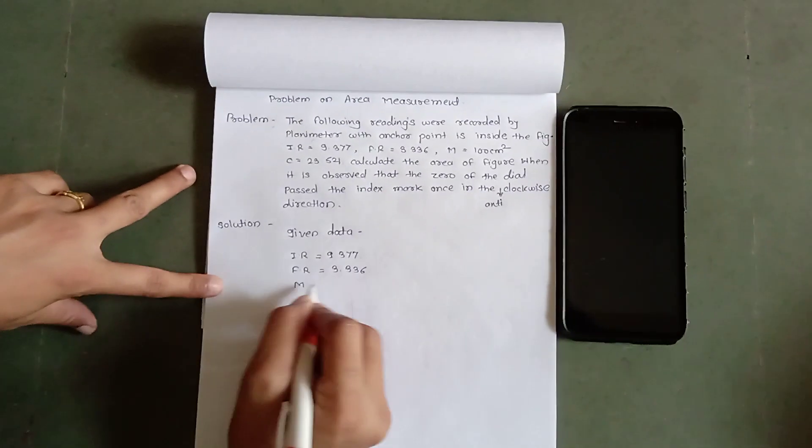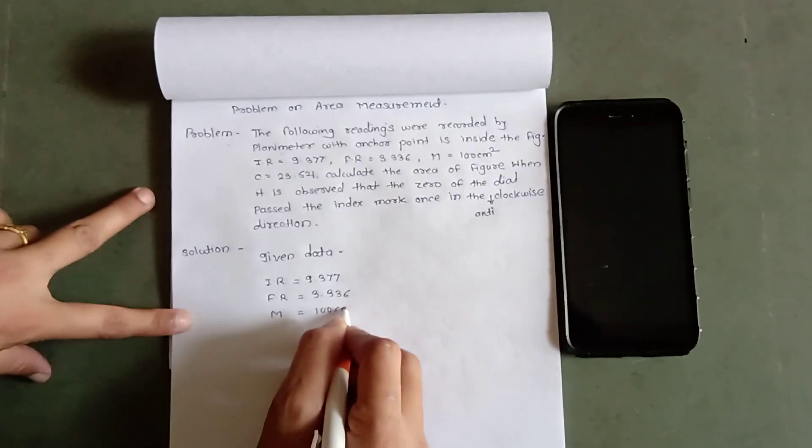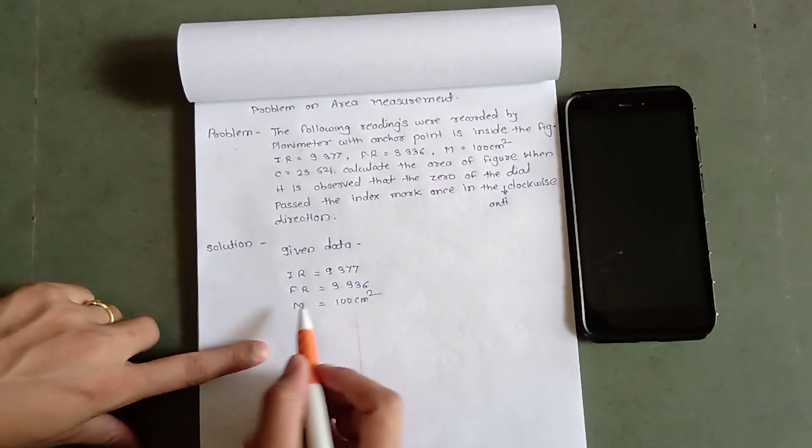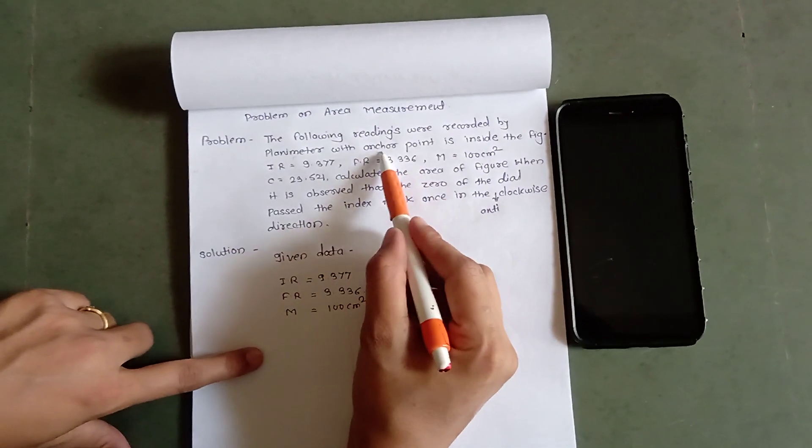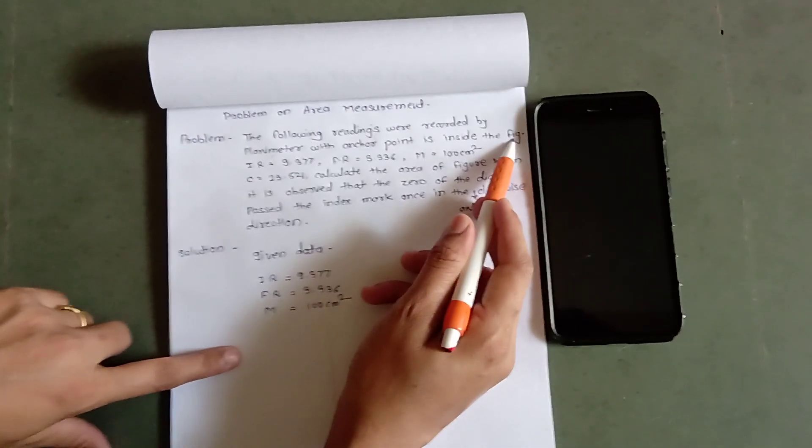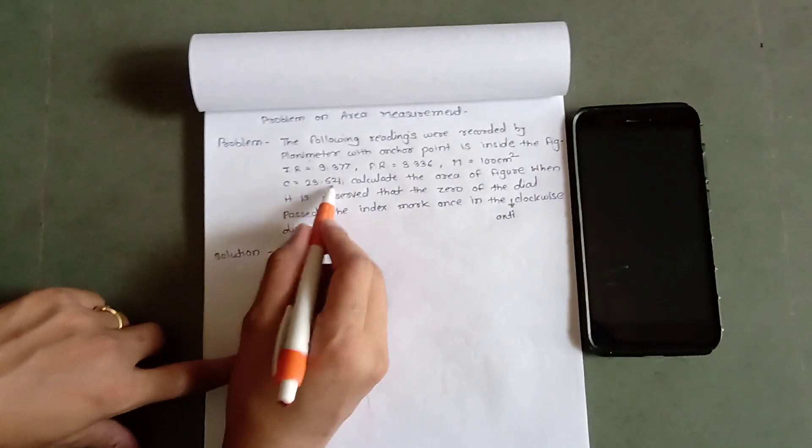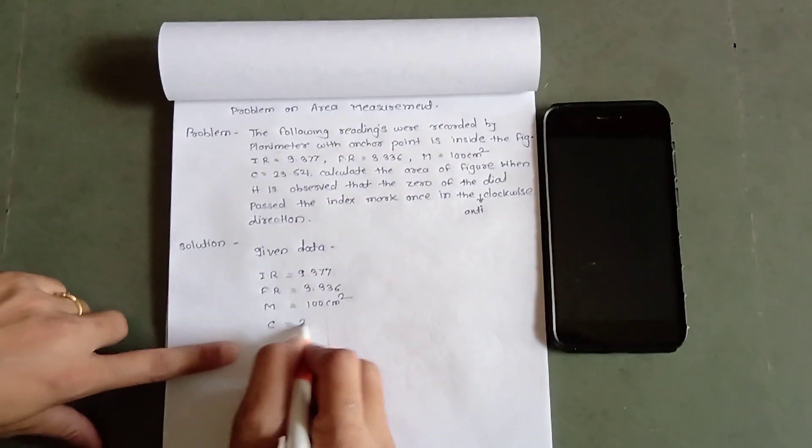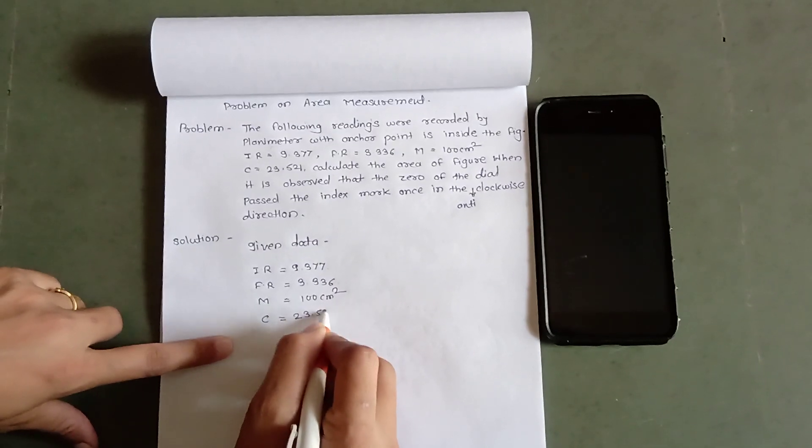The value of M equals 100 cm square. And in the problem, it is given that anchor point is inside the figure. So that is why we have to consider the value of C, 23.521.